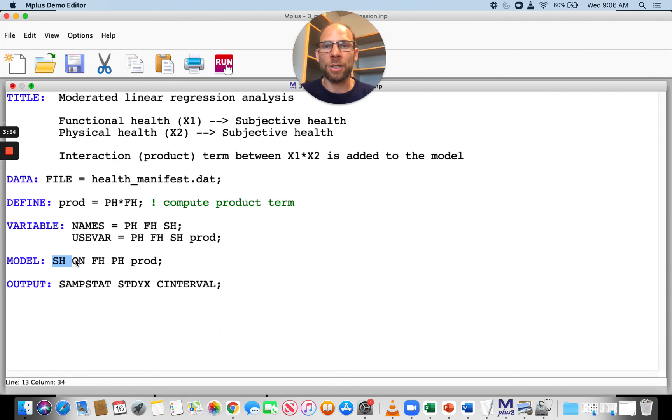You just say sh, the dependent variable on fh ph. So that would be the main effects. And then also on prod. So prod just simply gets added to that on statement.